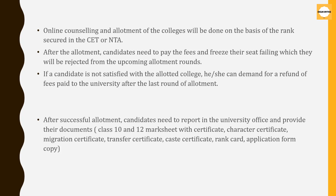If you are interested in admission, once you get an allotment you will go for counseling and document verification, where you will need to report all your documents at the university office. The required documents are: Class 10 and 12 marksheets with certificates, character certificate, migration certificate, transfer certificate, caste certificate if you are under a reservation category, your rank card, and your application form.